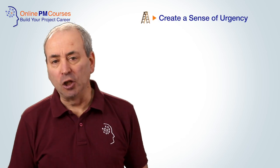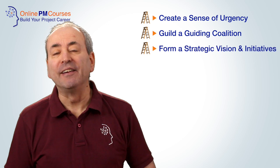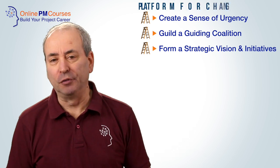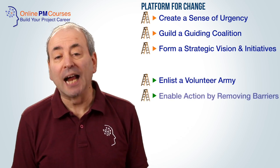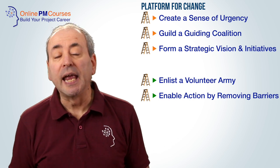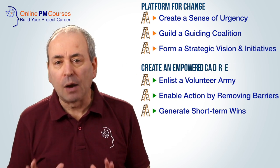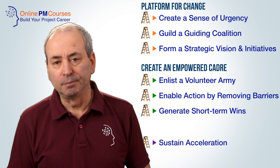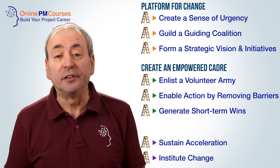So what are the eight steps? First, we need to create a sense of urgency. Second, build a guiding coalition. And third, form a strategic vision and initiatives. These first three steps create the platform for change. Fourth is enlist a volunteer army. Fifth, enable action by removing barriers. And sixth, generate short-term wins. This second set of three steps creates an empowered cadre of employees within the organization. The seventh step is to sustain acceleration, and the eighth step is to institute change. It's these last two steps that really do create the change.